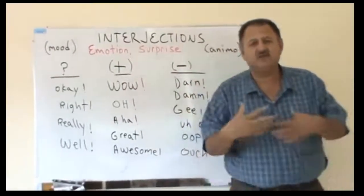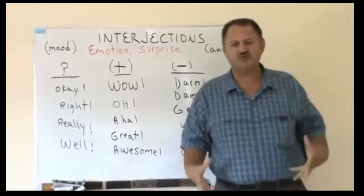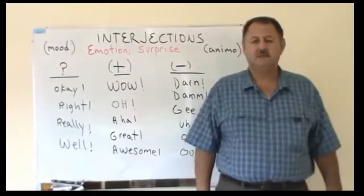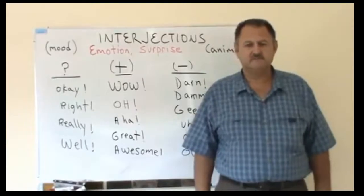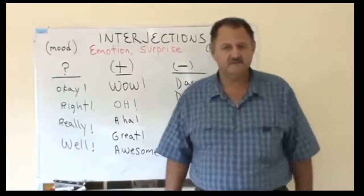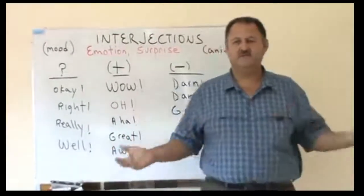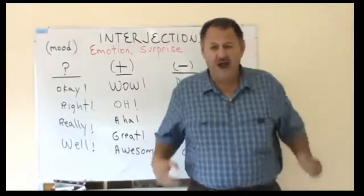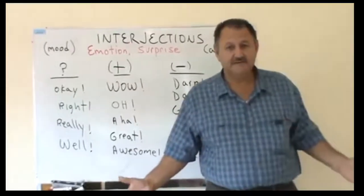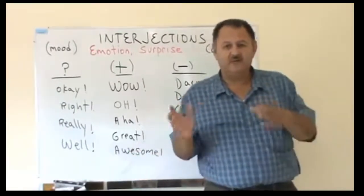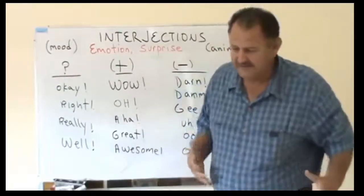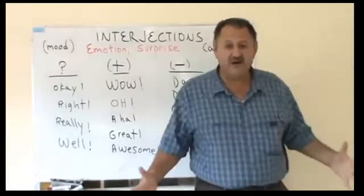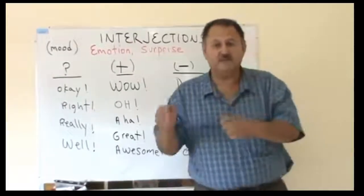What makes an interjection positive or negative is the tone of the voice — the emotion that is put into the interjection. For example, if I just say 'you won the lottery,' there's no emotion, no feeling. But if I say 'wow, you won the lottery!' — see how the word 'wow' gives it excitement and expresses surprise.